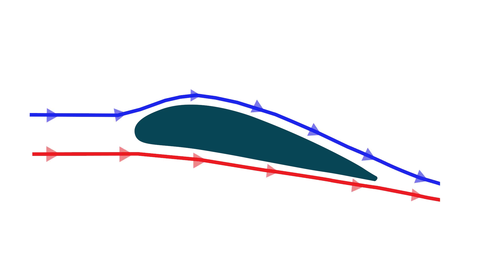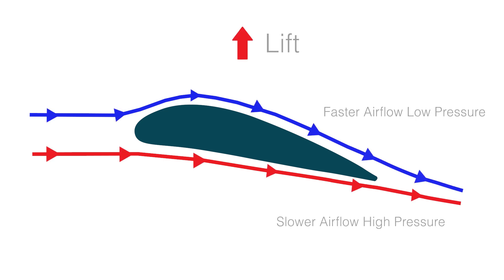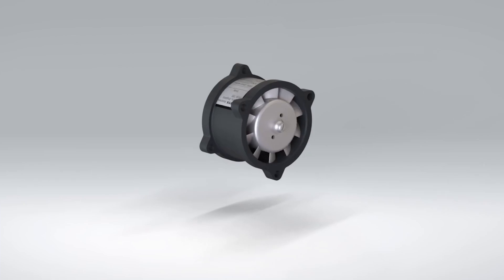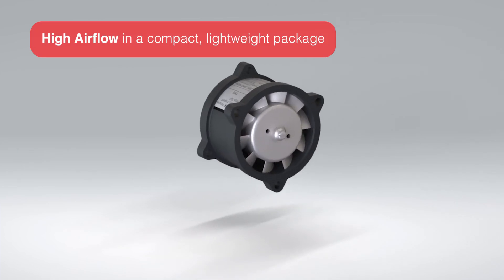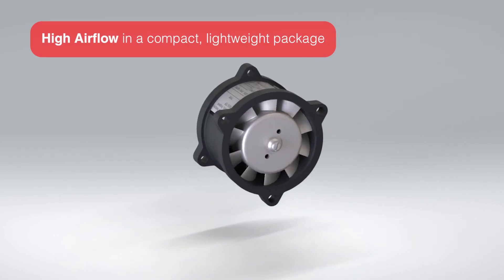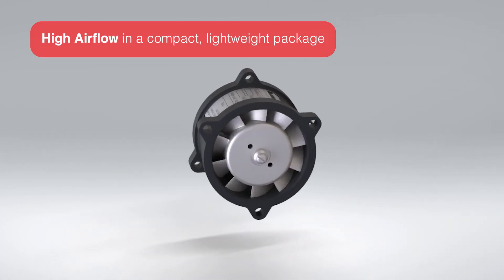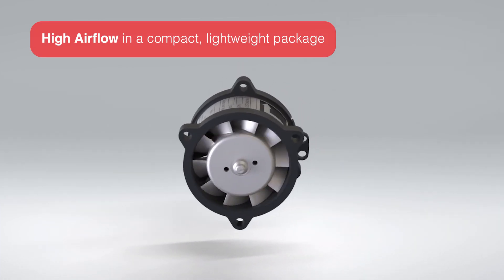Using an aerofoil section is the most efficient way to generate airflow, giving the most flow output for the minimum power input. This makes an axial fan the perfect choice to produce high airflow in a compact, lightweight package.